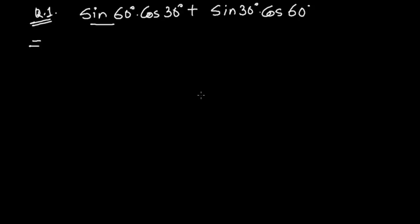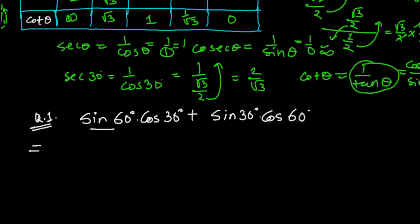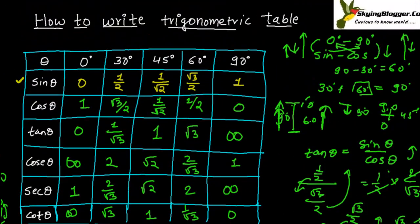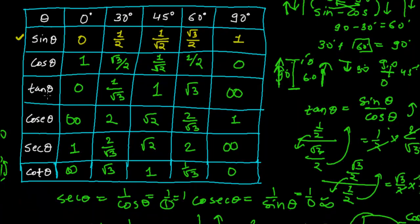Welcome friends, once again we recently learned about the trigonometric tables of different angles from 0 to 90 degrees. We learned the values of sine theta, cos theta, tan theta, cosec theta, sec theta, cot theta. If you know the value of sine theta from 0 to 90 degrees, you can easily fill up this table.